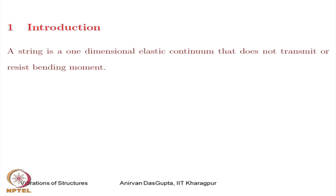Here on the view graph, you can see the definition of the string. A string is a one-dimensional elastic continuum that does not transmit or resist bending. This is the definition that we will use for a string. Now I will show you some examples of strings.